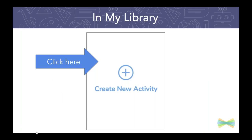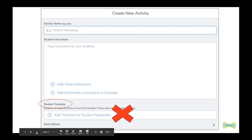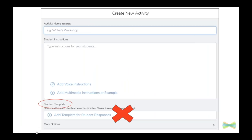This is your space where you may have already saved activities, but you'll also notice this box where it says create new activity. That's where you're going to click to start from scratch. When you do that, it will bring you to a screen that looks like this.